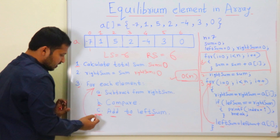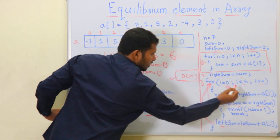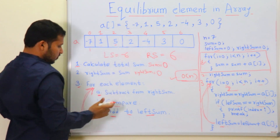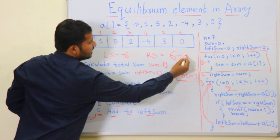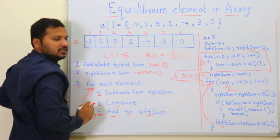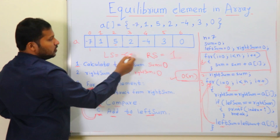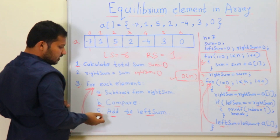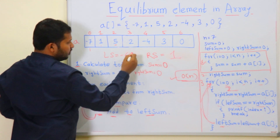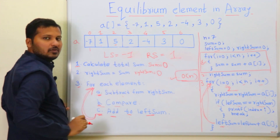Next iteration, i = 2, element = 5. Subtract from right_sum: 6 - 5 = 1. Compare: left_sum (-6) equals right_sum (1)? No. Add to left_sum: -6 + 5 = -1. End of third iteration.